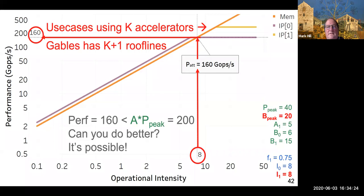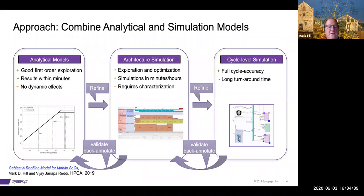It's left for an exercise for the students and professors to do better. And you can do better. In general, if you're using K accelerators, the Gables model will display K plus one rooflines, one for each IP block and one for the off-chip memory bandwidth.